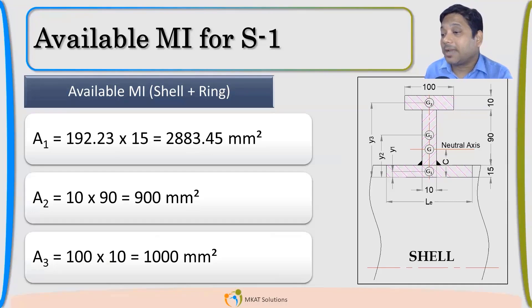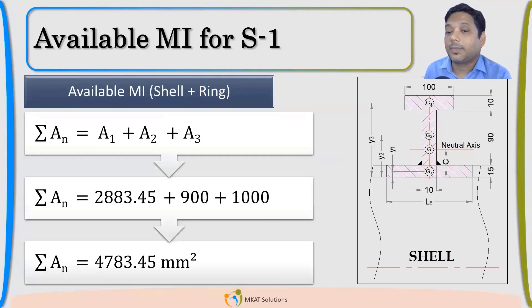Now, I can calculate the area of these three different sections. I have A1, A2 and A3. Now, I will do the summation of AN means all the areas. A1, A2, A3. So, this is the total area of these cross sections.